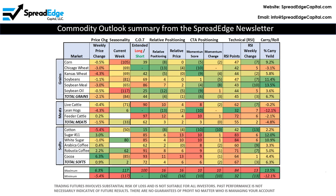This page shows the Commodity Outlook summary page that is included in the newsletter. The Commodity Outlook includes weekly price change, seasonality, commitment of traders, relative positioning, CTA positioning, relative strength, and commodity carry and roll. Each of these indicators is explained in detail in the newsletter.